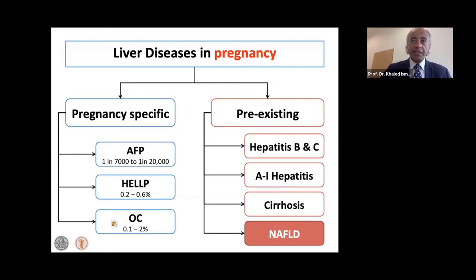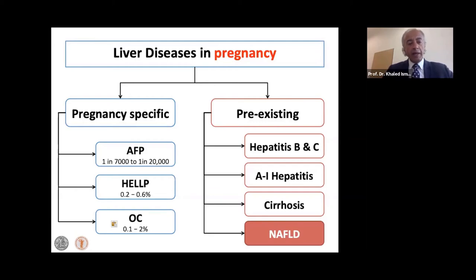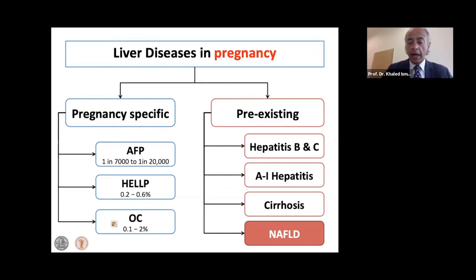The last pregnancy-specific condition is obstetric cholestasis — also called intrahepatic cholestasis of pregnancy — and they are all one and the same thing. It is not uncommon, with an incidence as high as 2%, so we encounter this in daily practice. These women will find you because they have a lot of itching, which is very distressing. It is linked to poor pregnancy outcomes, so we watch these pregnancies very carefully, particularly fetal growth and development, and many end up being delivered a little early.